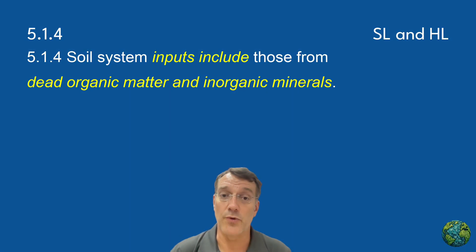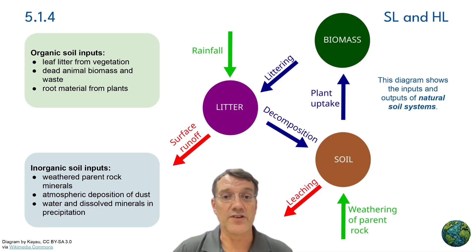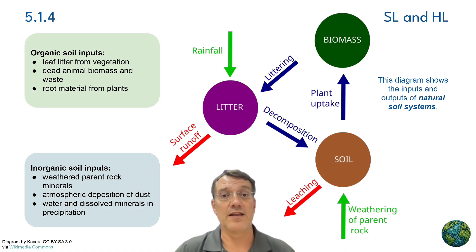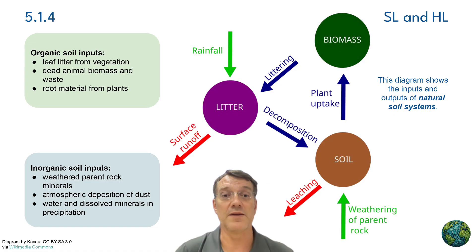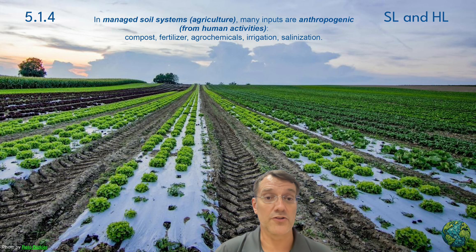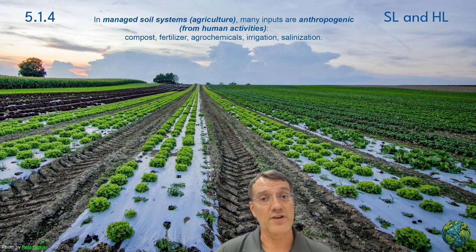Soil system inputs include those from dead organic matter and inorganic minerals. The organic inputs into soils come from leaf litter, dead animal biomass and waste, and root material from plants. Inorganic inputs include weathered parent rock minerals, atmospheric deposition of dust, and water containing dissolved minerals from precipitation. In managed agricultural systems, humans add inputs like compost, fertilizer, agrochemicals, and irrigation water. These anthropogenic inputs can dramatically alter natural soil processes, and can sometimes lead to problems like salinization if not properly managed.